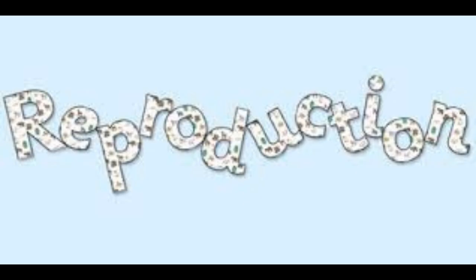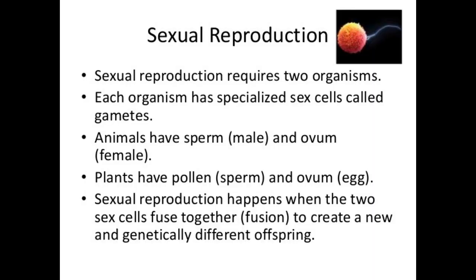Welcome. In the last class we studied about the asexual method of reproduction. Now we'll see about the sexual method of reproduction. The type of reproduction in which two parents are involved and fusion of gametes takes place is called sexual method of reproduction. In sexual reproduction the gametes are fused, and that is called fertilization.